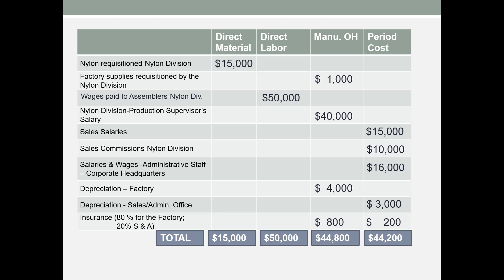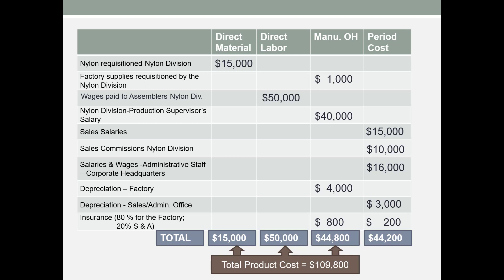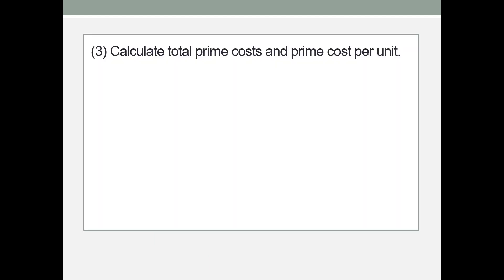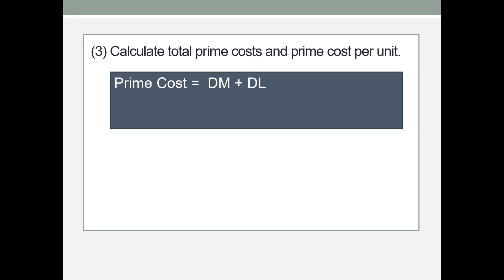If we wanted the total production costs, we add direct material plus direct labor plus manufacturing overhead, totaling $109,800. Now we'll look at prime cost and conversion cost. Prime cost is direct material plus direct labor: $15,000 plus $50,000 totals $65,000.